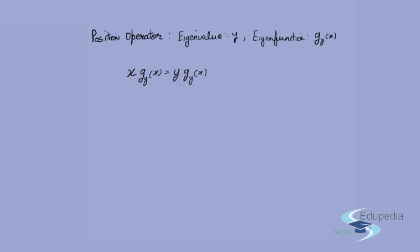Looking closely at x · g_y(x) = y · g_y(x), the solution must be 0 everywhere except where x equals y, because otherwise the equation cannot be satisfied. The function that is 0 everywhere except at one point is called the Dirac delta function: g_y(x) = a · δ(x − y), which is non-zero only at x = y, where it has value a.